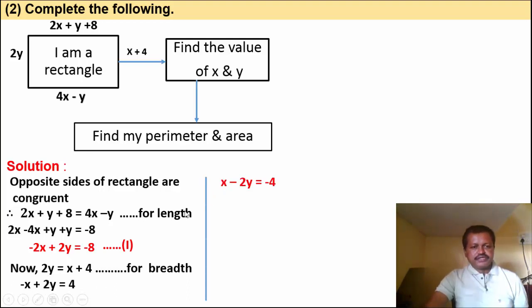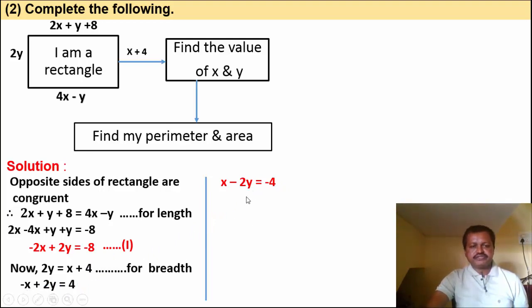Multiplying by minus 1 on both sides: x minus 2y is equal to minus 4. This is equation number 2.